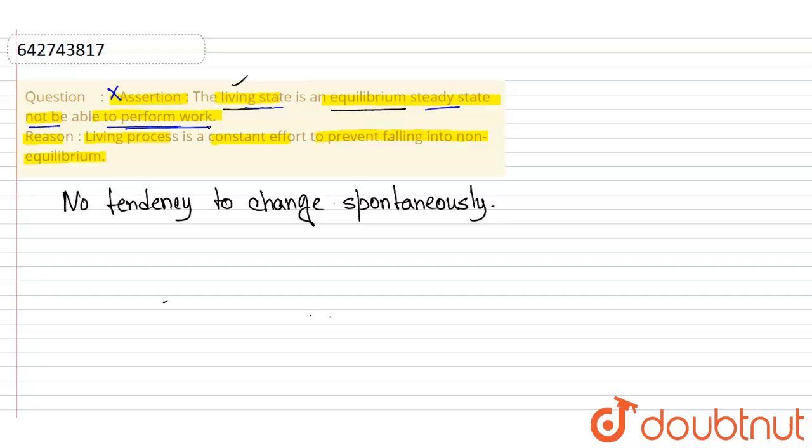The steady state refers to the maintenance of the constant internal concentrations of the molecules and ions in the cells and organs of the living system. And the system that is in a steady state remains constant over time, and living organisms that have this steady state, that is known as homeostasis. So, homeostasis, what is homeostasis?